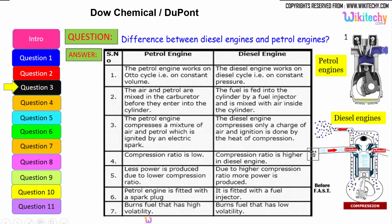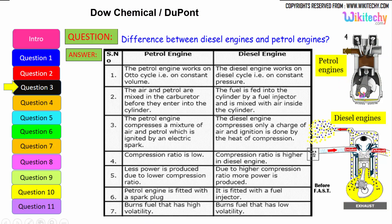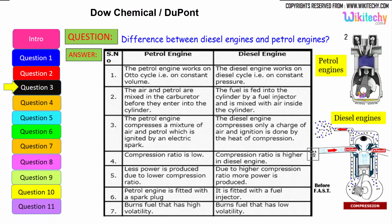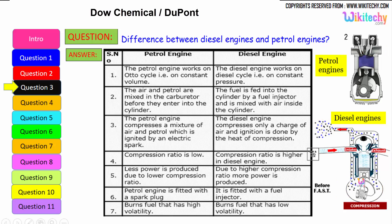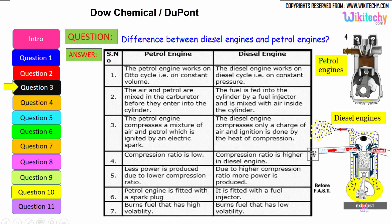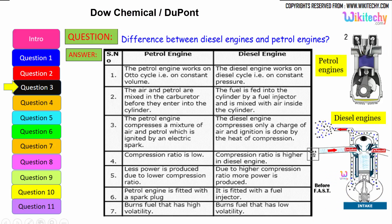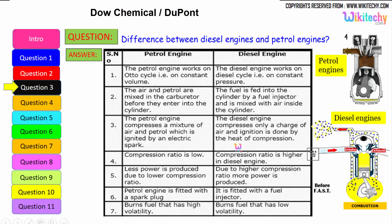The petrol engine burns fuel with high volatility — petrol is highly volatile. The diesel engine burns low volatility liquids as well, since diesel is a low volatile liquid. These are some of the key differences between the petrol engine and diesel engine.